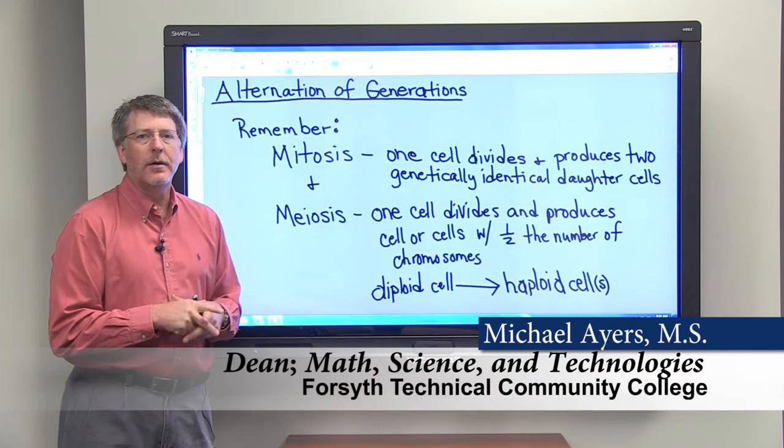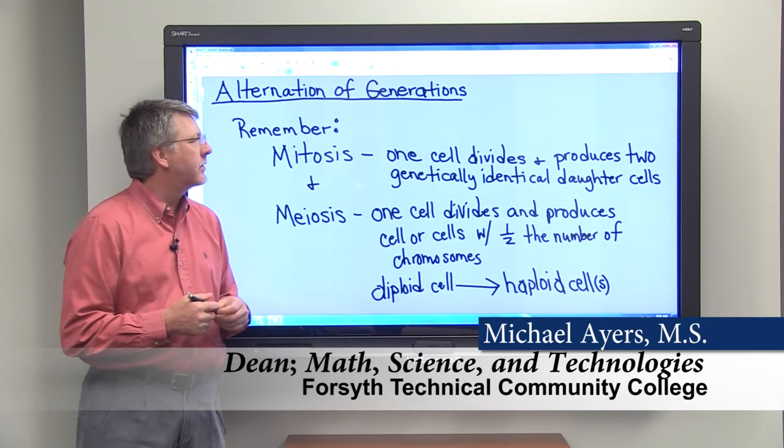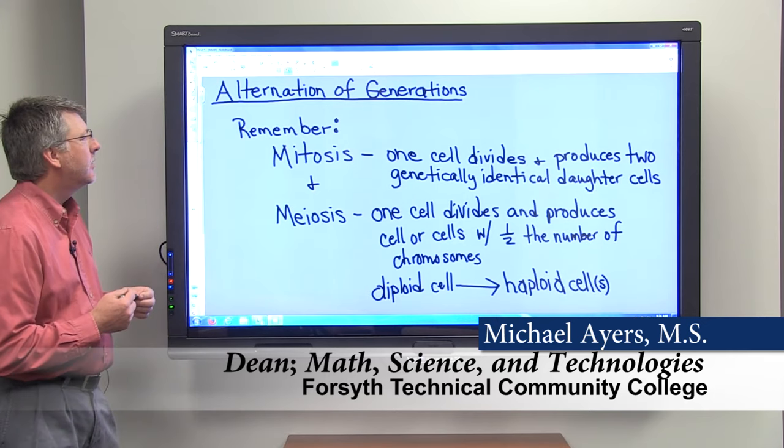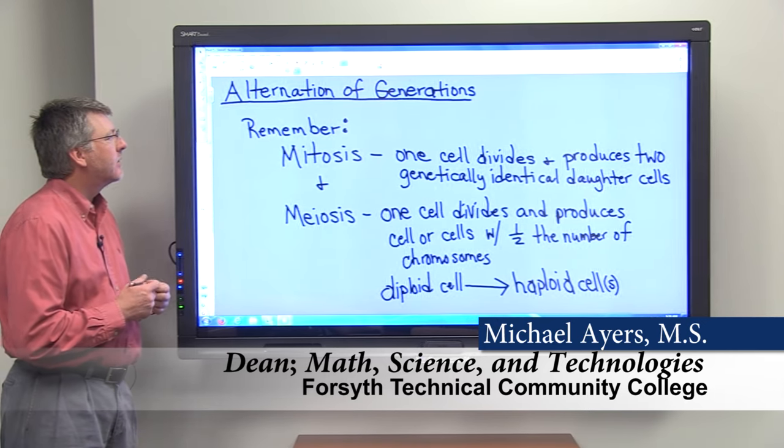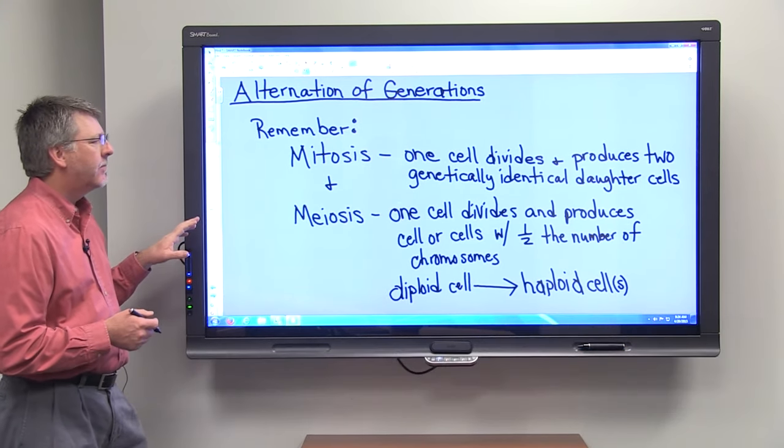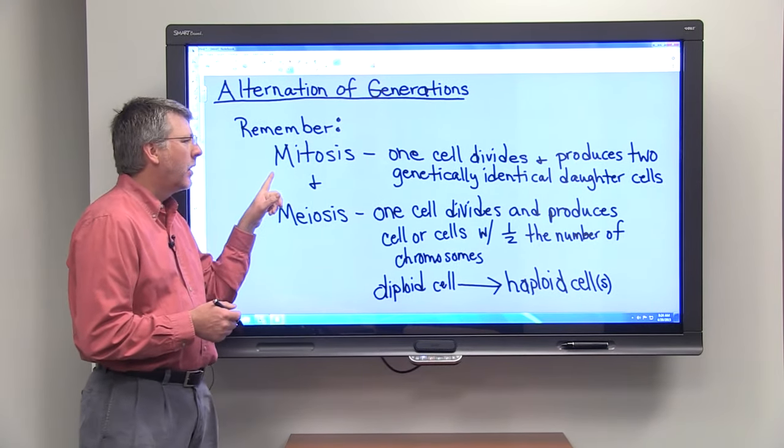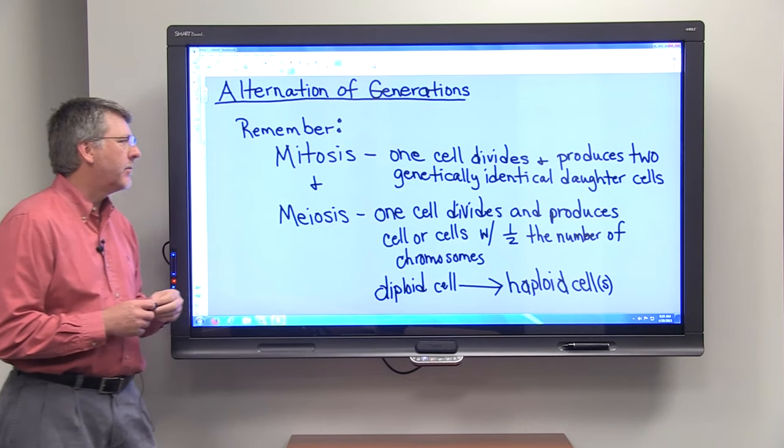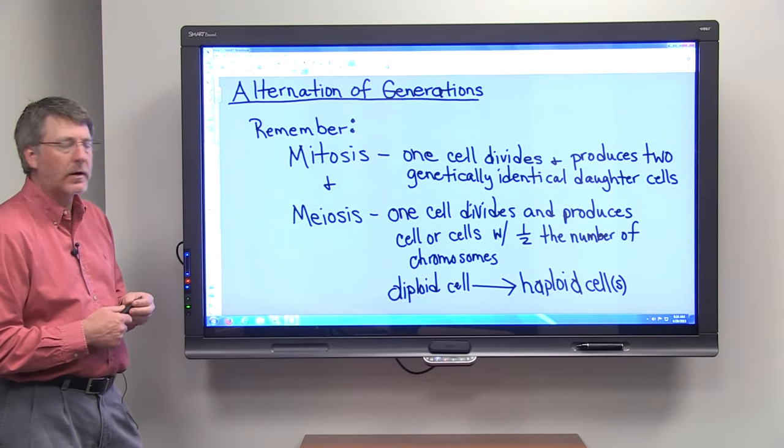So let's talk about alternation of generations, which is something that is unique to plants and some protists. With alternation of generations, it's very important that you remember how mitosis and meiosis works. So here's a quick review.